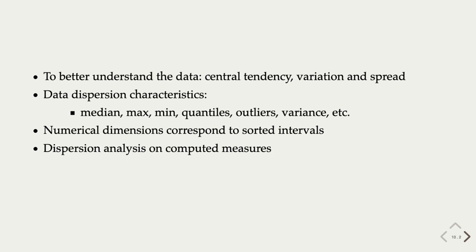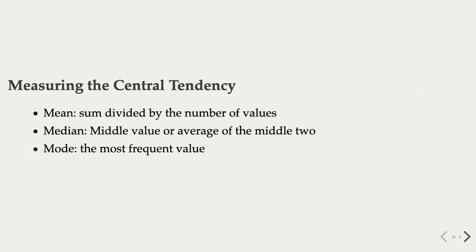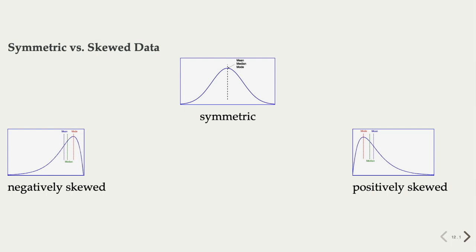Once we know the type of data we are dealing with, we can look at the basic statistics based on data samples. For numeric data, we want to look at the central tendency, variation, and the spread of the distribution. First on the central tendency, we have basic statistics such as the mean, the median, and the mode. The mean is simply the overall average, often estimated by a sample. The median is the value in the very middle of the sorted data. The mode, on the other hand, is the most frequent value or values.